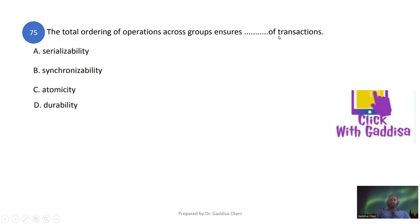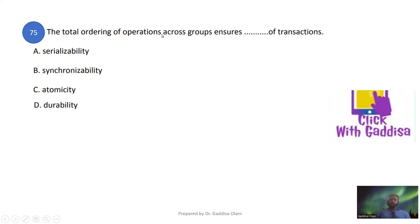The total ordering of operations across groups ensures the serializability of transactions.